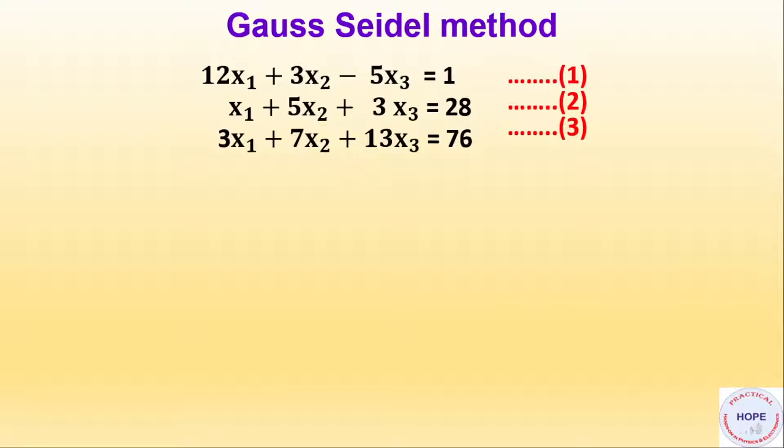Let's take an example. We need to find the values of x1, x2 and x3. We are taking the case of three variables. First initialization. Say we take initial values of x1, x2 and x3 as 0. Then iteration 1.